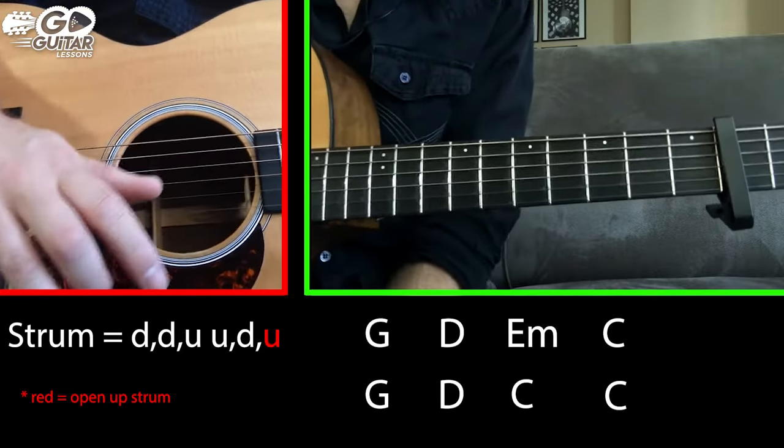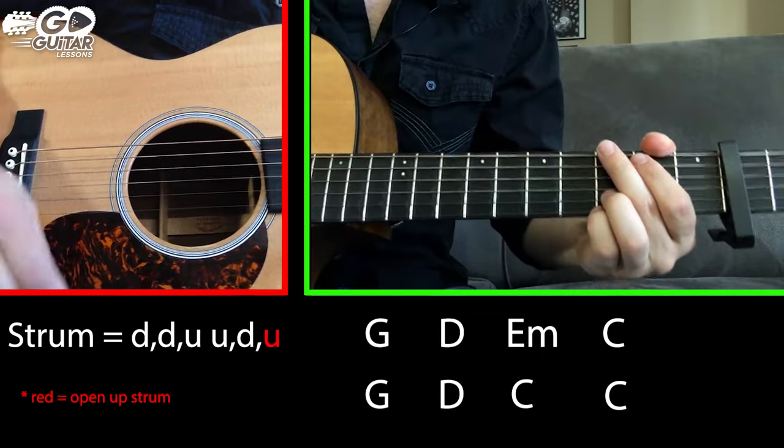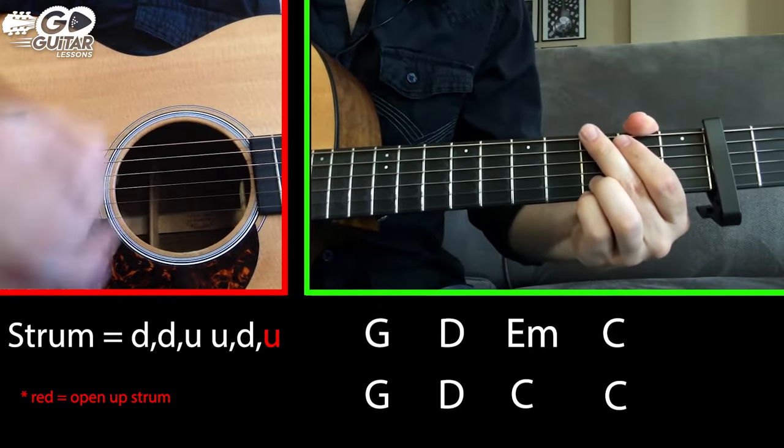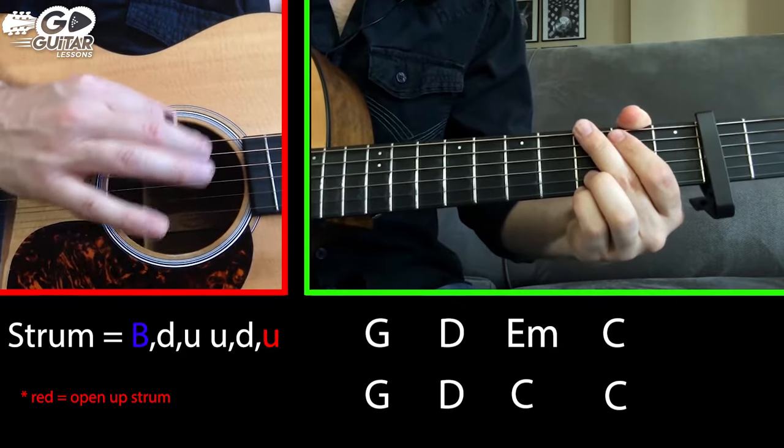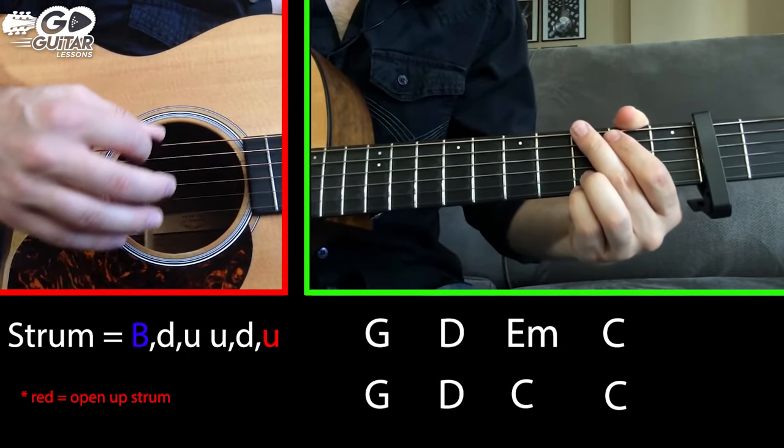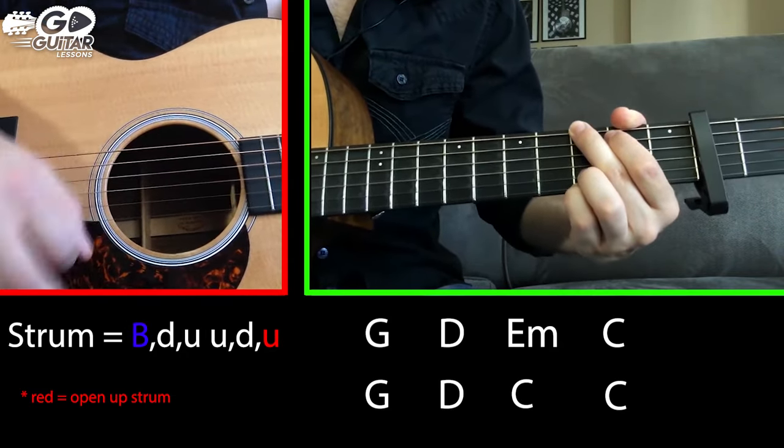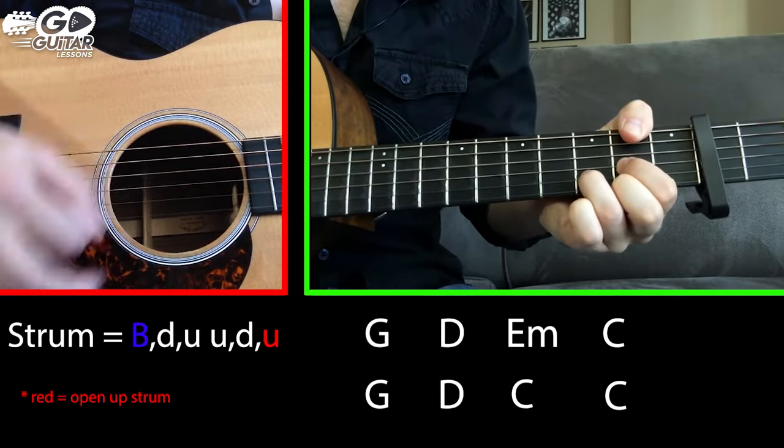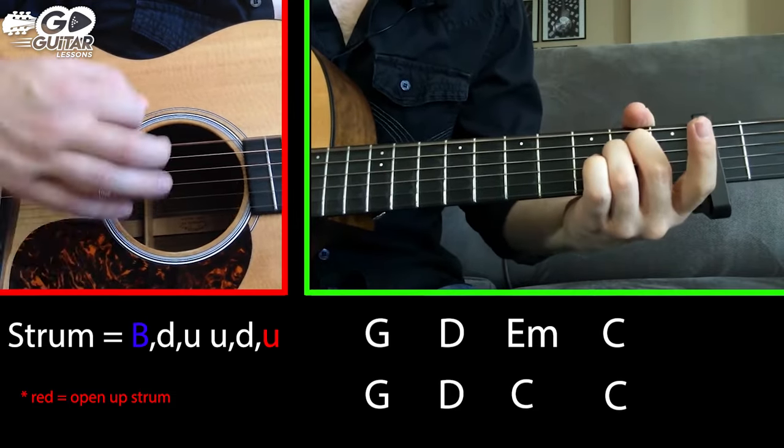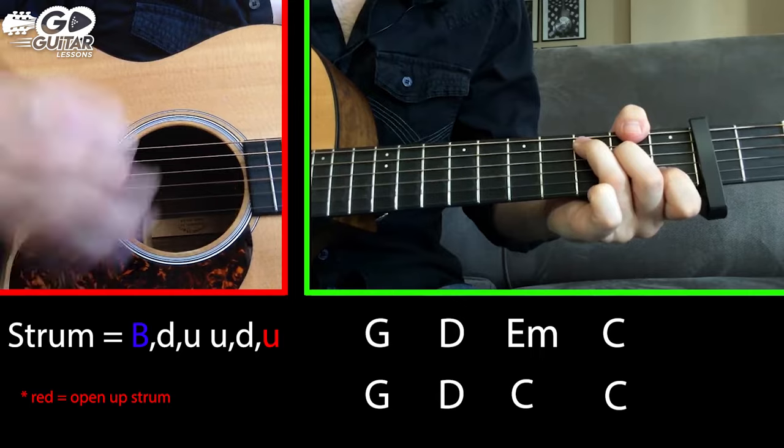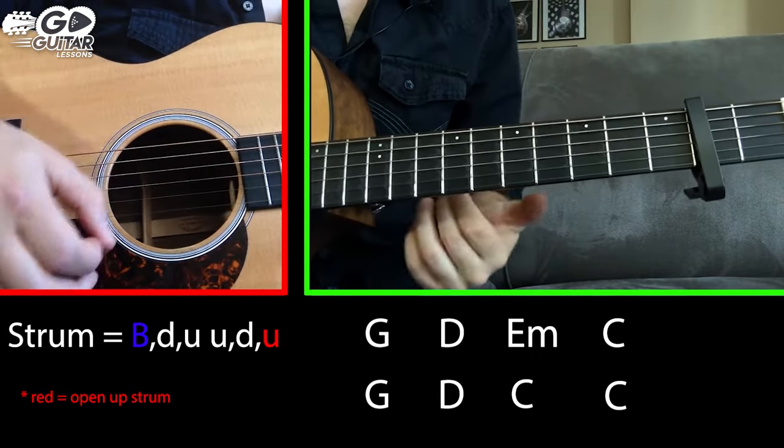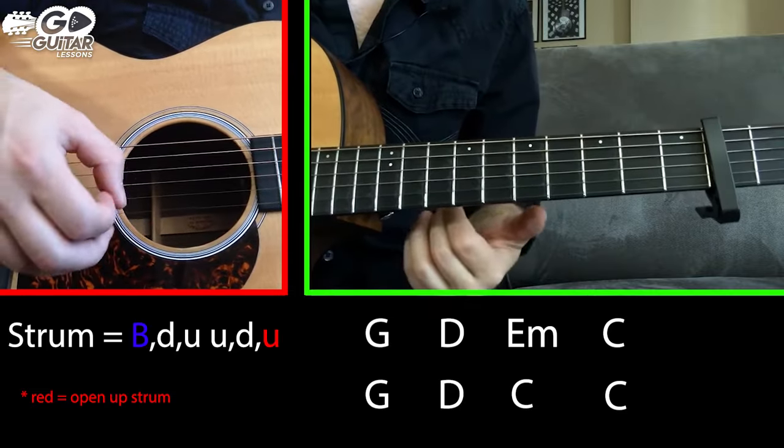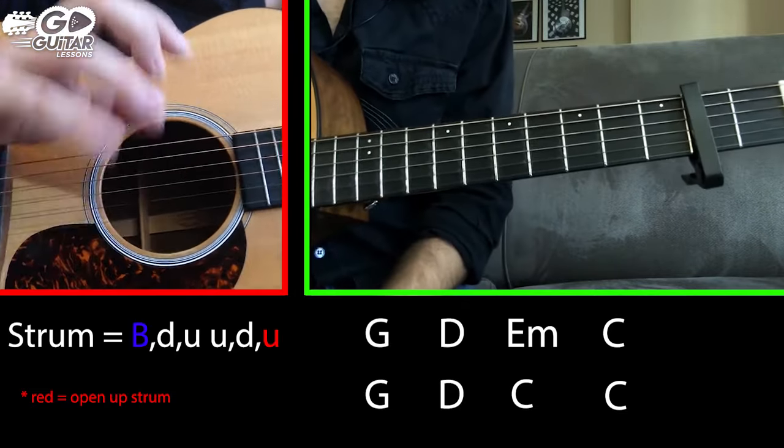That version is a great campfire version, but let's add one layer of detail. So instead of down, down, up, up, down, up, we're going to replace the first down with a bass note and it's going to look like this. So that helps to clean it up and give us a bass sound and in this style of music it's important to have that.